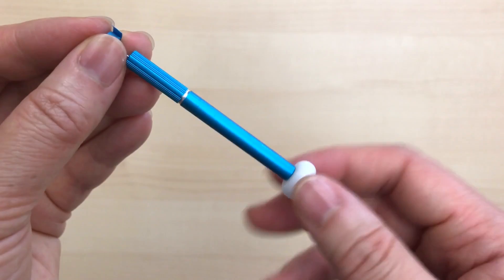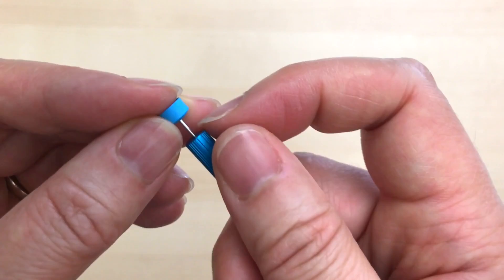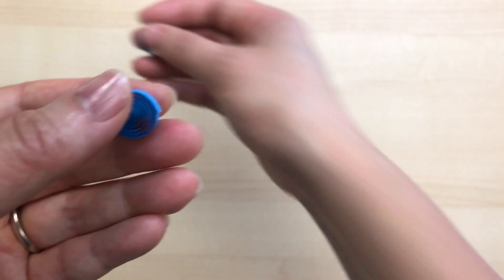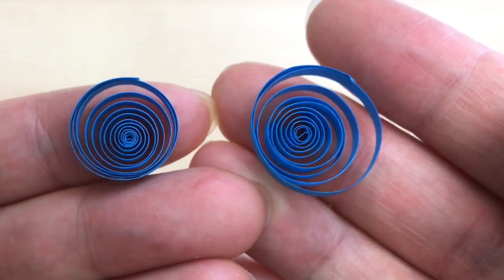Here it is, here's the fine slotted quilling tool. You can see how much smaller that innermost coil is and I'll show you a comparison between the two. You can see the difference, we're only talking about the innermost coil here but it's quite a bit smaller.